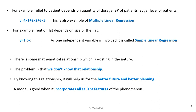Next example: the rent of a flat depends on the size of the flat. The equation is y equal to 1.5x. As only one independent variable is involved, it is called simple linear regression. We are required to find out the relationship between y and x — that means finding out the factor 1.5, because 1.5 times x equals y. In the future, when a new x comes, we can easily predict the value of y. Our aim is to find out that particular factor or parameter.